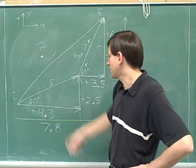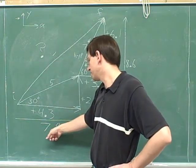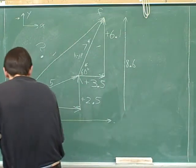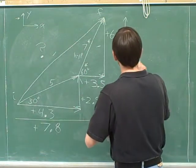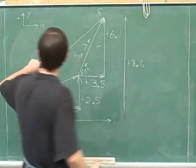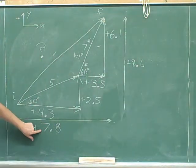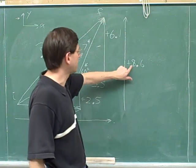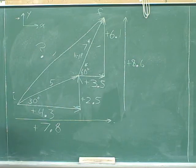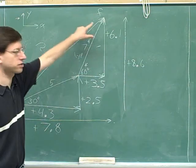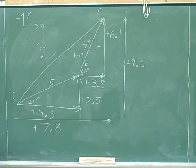The overall displacement vector has a horizontal component of positive 7.8 and a vertical component of positive 8.6. That's a decent way to describe the overall vector, but we'd probably like to describe the overall vector directly — we'd like to know actually how long this overall vector is.